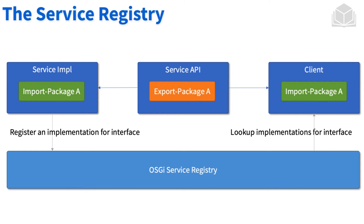Once we deploy the service implementation bundle, the OSGi service registry recognizes that a component has been deployed, registers it, and keeps track of it. Over on the client side, the client bundle imports the package exported by the service API, so the client is importing the interface. When it makes a call to that interface, what it's effectively doing behind the scenes is saying: hey OSGi service registry, I have this interface, you have the implementation somewhere — go look for it. The service registry then finds the registered component implementing that interface and gives the client a reference of that component.